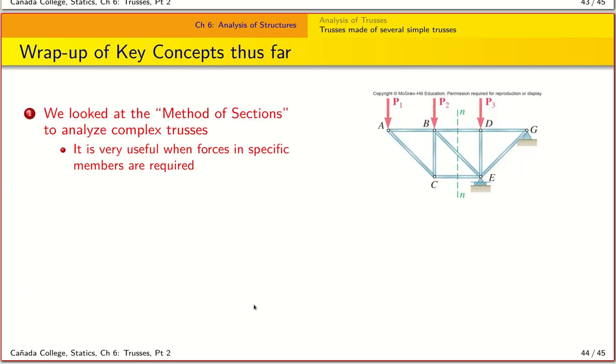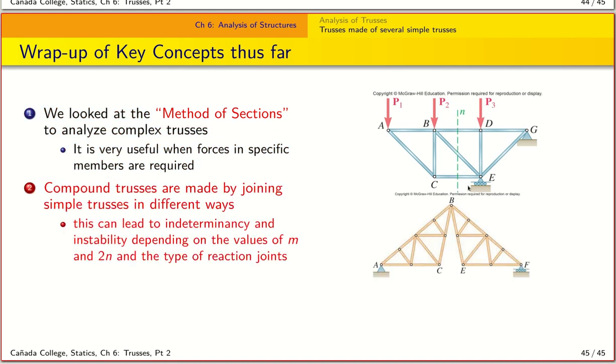So to end, we have discussed two key aspects here. First is the method of sections that allows us to analyze the force in any given member in a complex truss system in a very efficient manner by taking a slice and then calculating forces using a free body diagram of the freed up section. And then we looked at a compound truss, which is defined as a truss that is built by connecting to other simple trusses in many different ways. And within these compound trusses, indeterminancy and instability depend on the values of M and 2N as well as the type of reaction joints.